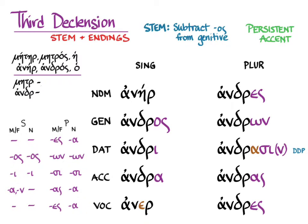Again, the accent is persistent-ish. We get the same rule where the accent is on the ultima in the genitive and the dative, and on the penult in every other form. Let's look at another variation of the third declension.